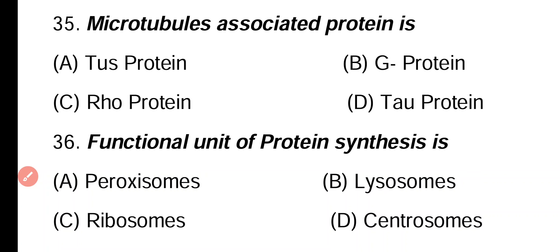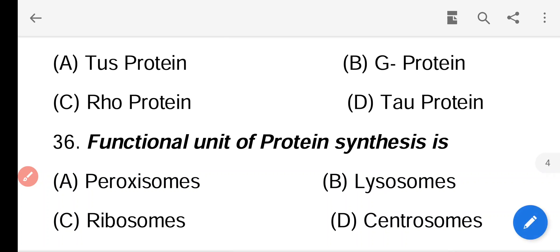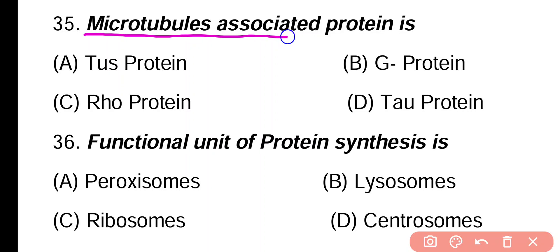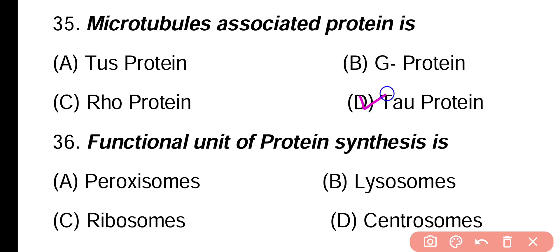Question 35. Microtubule associated protein is: TAS protein, G protein, R protein, or tau protein. Correct answer is option D. Tau protein is the microtubule associated protein.